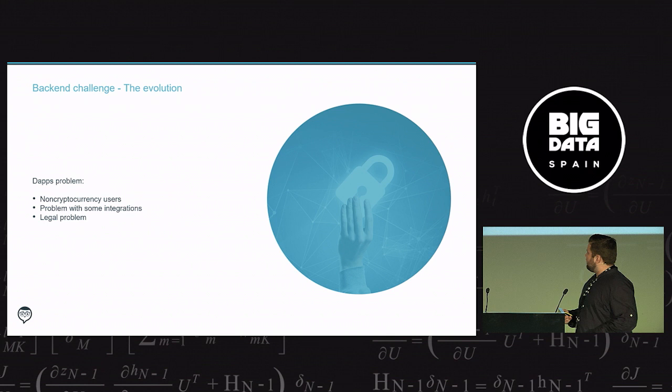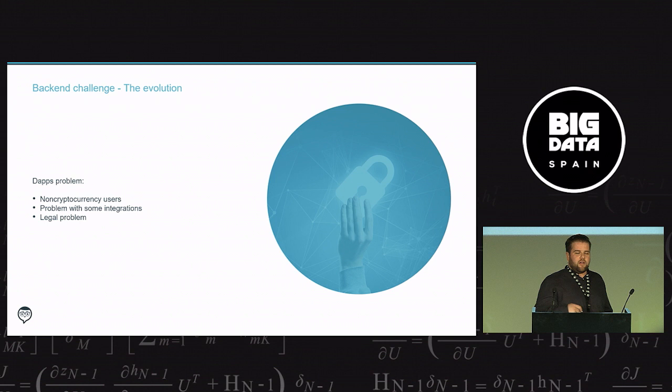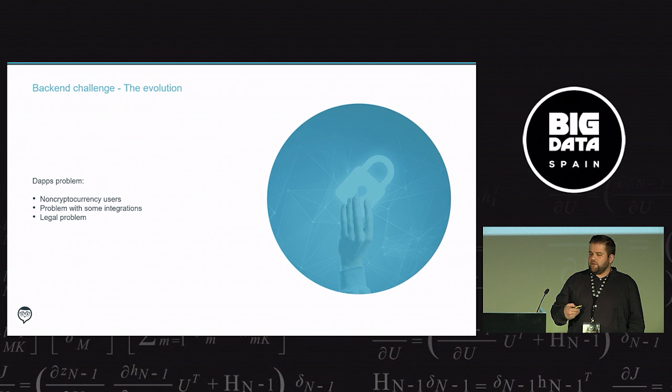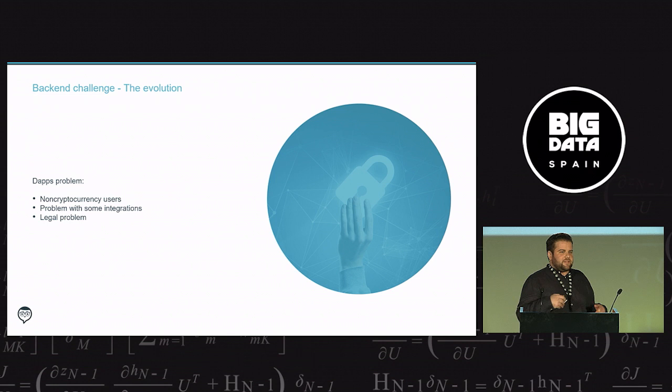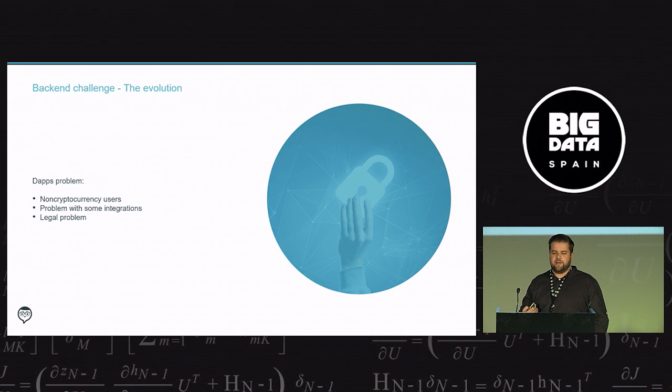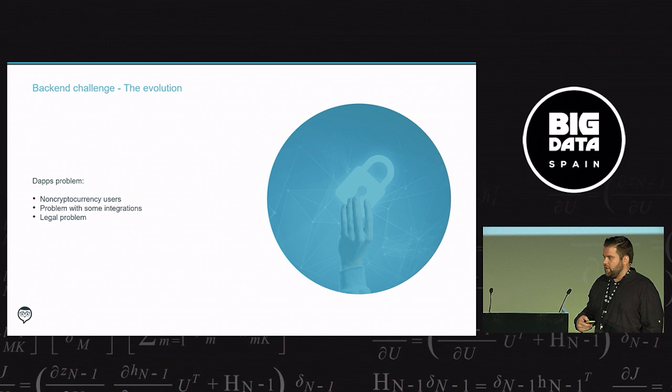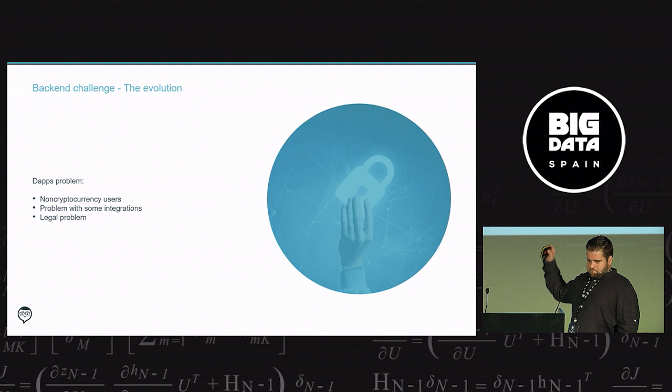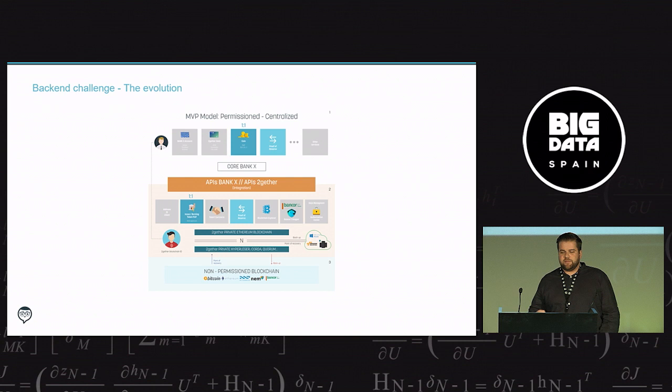But with this implementation, we have difficult problems to solve. Firstly, how to teach non-cryptocurrency users how it works and how to use it. For example, credentials are managed by the user. Secondly, the problem with some integrations. For example, the integration with a message broker like RabbitMQ, there is no easy way to implement it. You have to generate a proxy or a gateway to connect it. Thirdly, the legal problem. Cryptocurrencies are legal in Spain. But using it in a bank environment, it has a lot of legal problems with a difficult solution to implement.